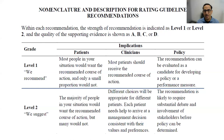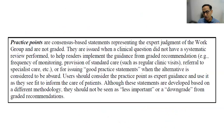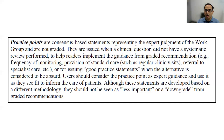The strength of evidence is rated A, B, C, or D. A is the strongest — many large randomized trials or many well-performed modeling studies. B could be one well-done trial or a couple of modeling studies. Practice points have consensus-based statements representing the expert judgment of the work group. They're not graded and are issued when there wasn't a systematic review done. I think of practice points as a guide to implement the recommendation — not a downgrade, just a different intent.